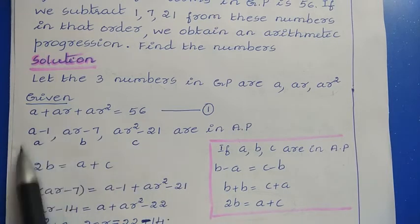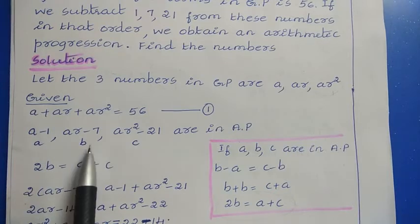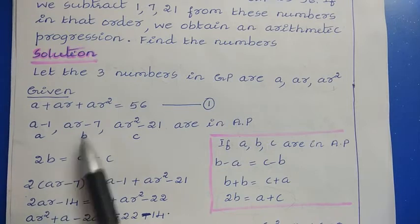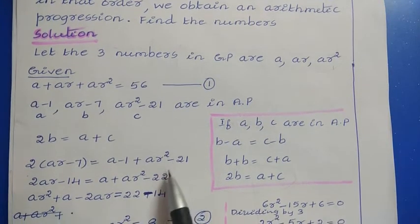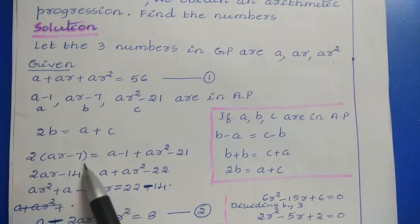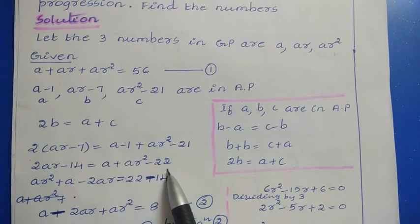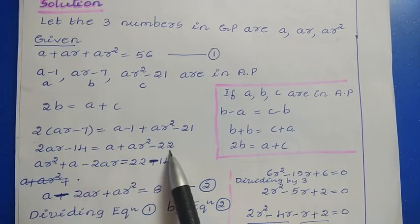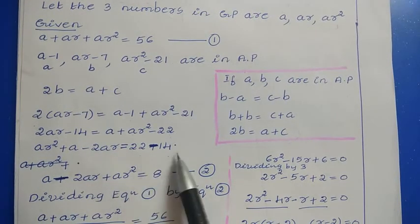Applying 2B equals A plus C to our three AP terms — A minus 1, AR minus 7, AR squared minus 21 — we get: 2(AR minus 7) equals (A minus 1) plus (AR squared minus 21). Expanding: 2AR minus 14 equals A plus AR squared minus 22. Rearranging gives A minus 2AR plus AR squared equals 8. This is equation 2.